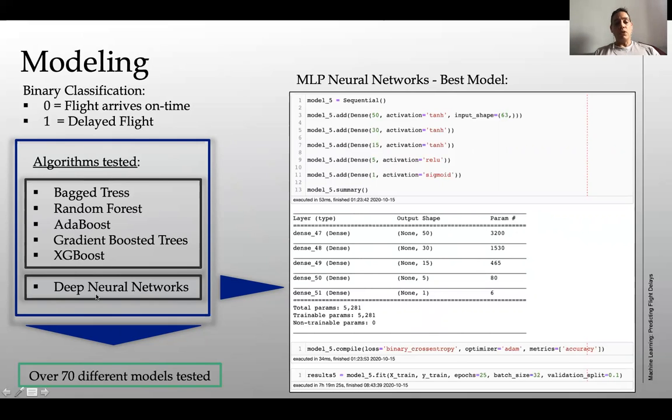So a total of over 70 models were actually tested and you can see on the right, this is an MLP neural network, which I believe is the best model. You can see the architecture of the model here, which is quite simple. It just has dense layers going from 50, 30, 55 and one. And then I'm using a sigmoid activation because it's a binary problem.